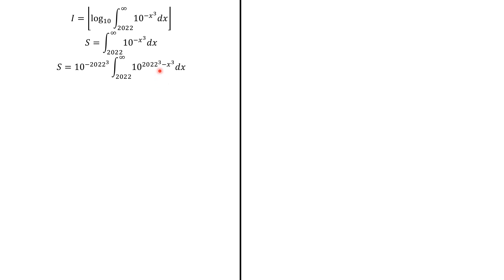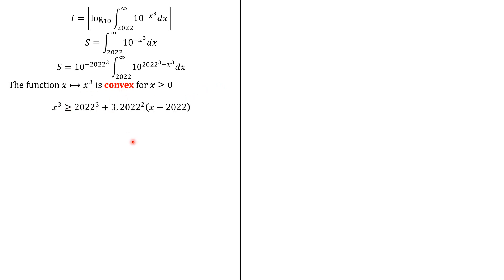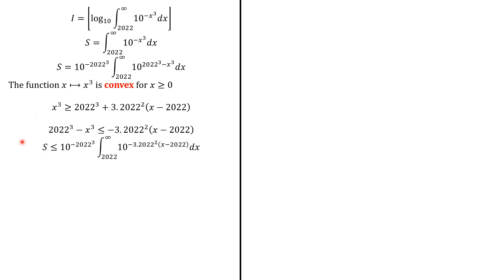If you consider the function x³, this is the difference between the image of x and the image of 2022. We know that x³ is a convex function because the second derivative is 6x, which is positive for positive x. So x³ is going to be greater than its tangent around the point 2022. This is the image of 2022 and this is the first derivative at 2022. Now we are looking for this difference, so we just manipulate a little bit to have this. We can now have an upper bound for this integral S, because this expression here is less than or equal to this other expression.